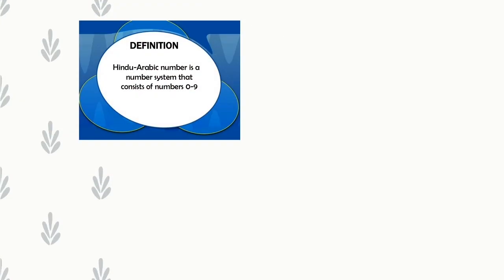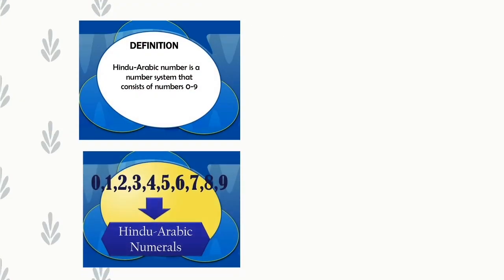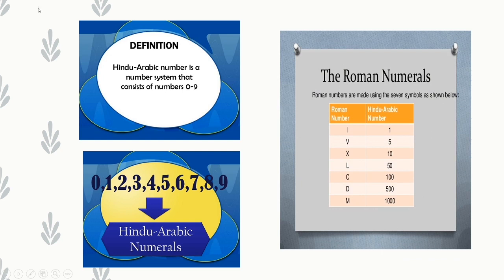Next concept is Hindu Arabic numerals and Roman numerals. The Hindu Arabic numeral system consists of the numbers 0 to 9. Every number is formed by using the digits 0, 1, 2, 3, 4, 5, 6, 7, 8, 9 — we use all these 10 digits to form Hindu Arabic numerals.